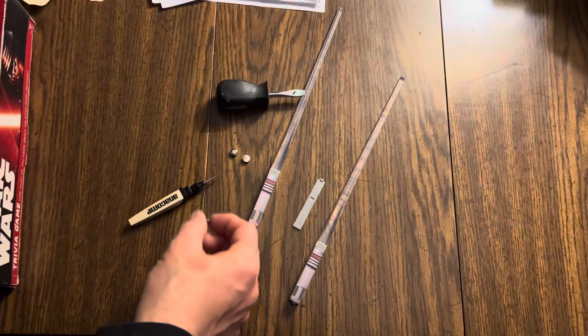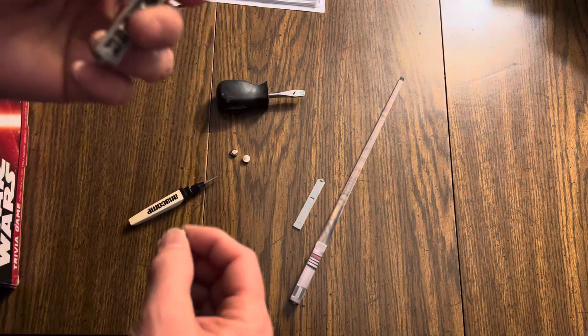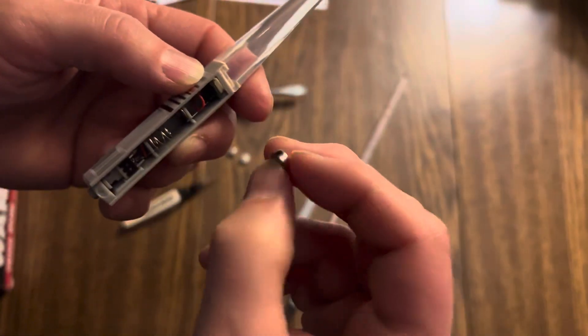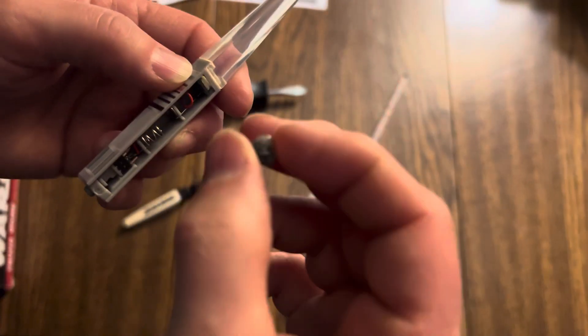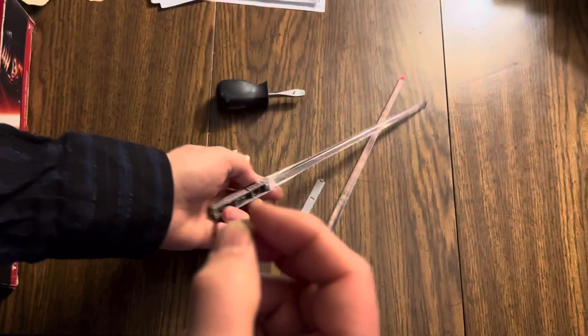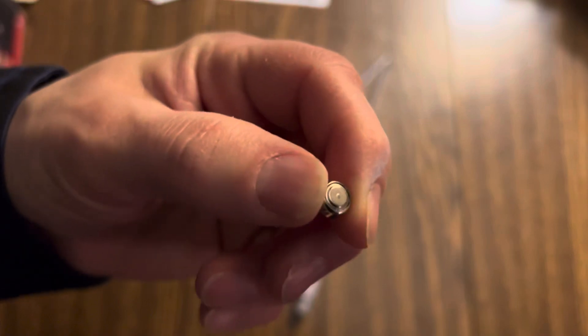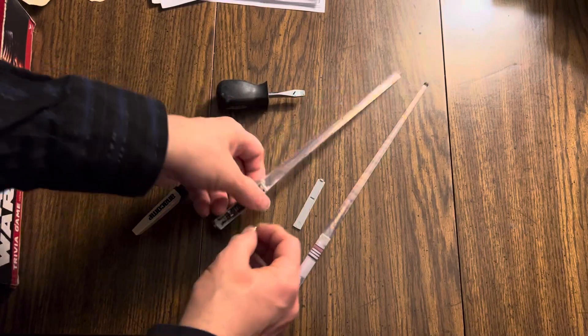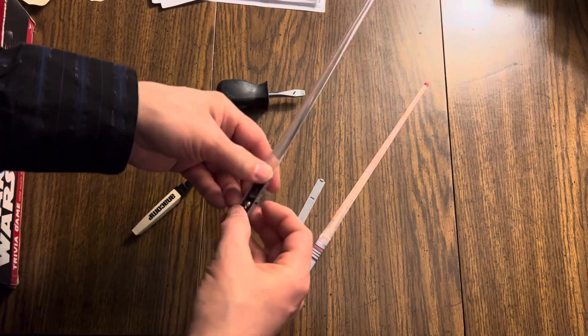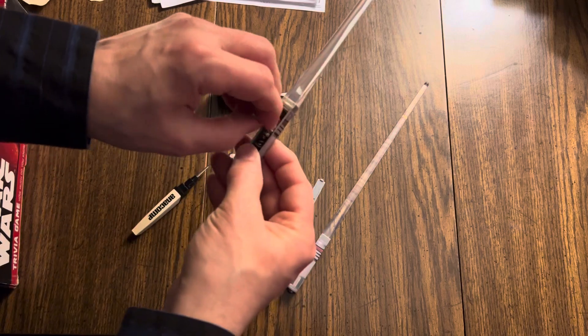They go in like this: the flat part with the writing on it goes towards the spring, and the part that's like the cylinder with the little circle on it goes towards the positive connection on the top. You stack them one at a time, and that can be tricky, especially at the spring.